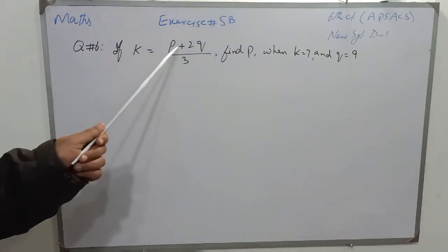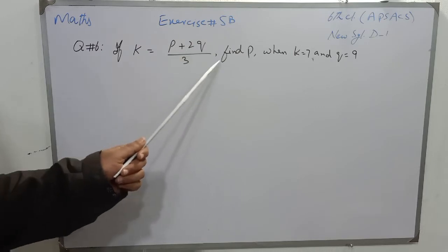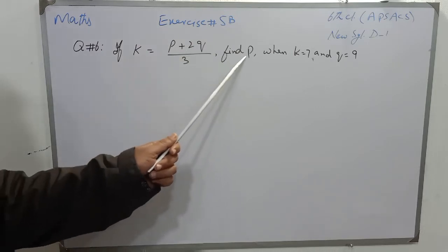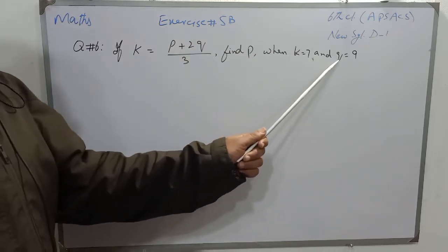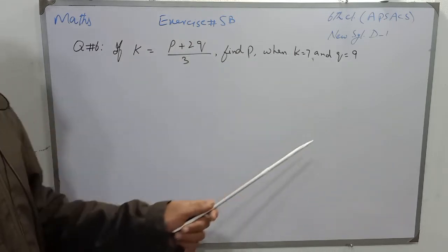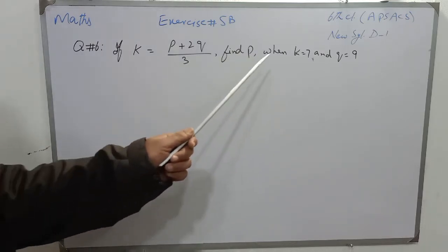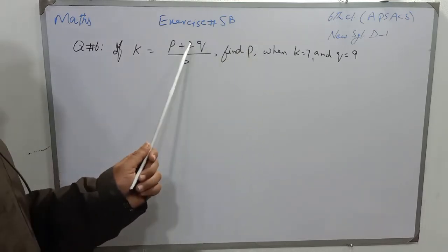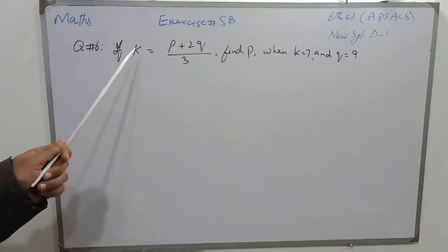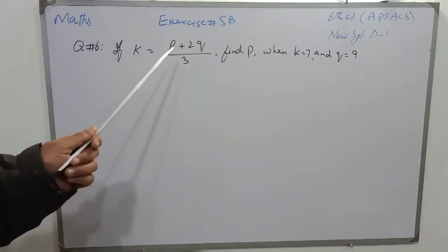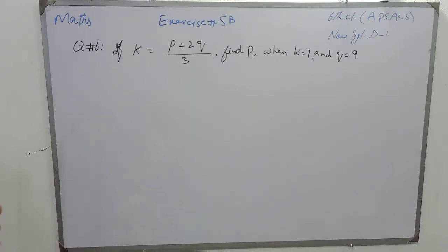Question number 6 is: if k is equal to p plus 2q over 3, then find p when k is 7 and q is 9. I will replace the values of k and q in this formula and then we will find the value of p.